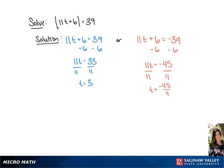So we have two solutions for this. We have t equals 3, or t equals negative 45 over 11.